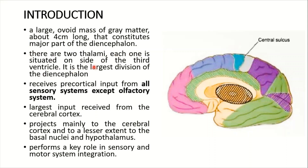There are two thalami, each one situated on one side of the third ventricle. The third ventricle is the cavity of the diencephalon. The thalamus is the largest part of the diencephalon. It receives pre-cortical input from all sensory systems except the olfactory system. The largest input is received from the cerebral cortex. It projects mainly to the cerebral cortex and to a lesser extent to the basal nuclei and hypothalamus.